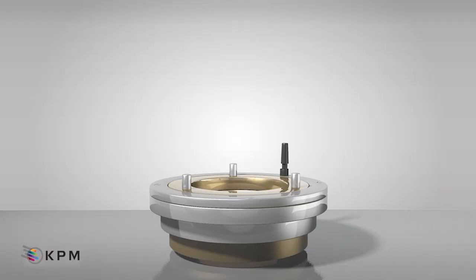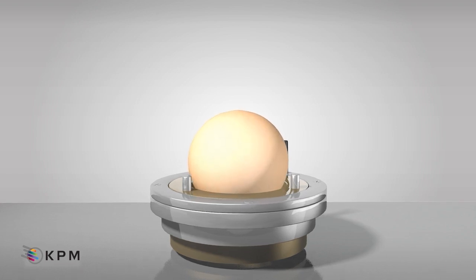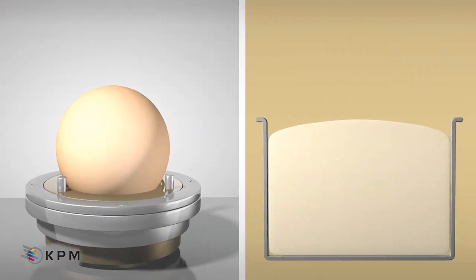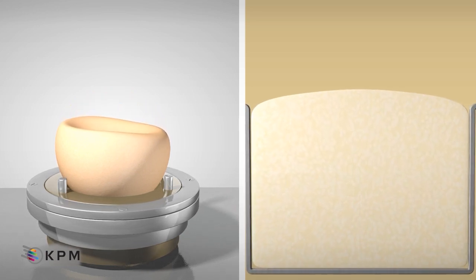An Alveograph test involves measuring the deformation of a dough bubble caused by a specific pressure generated using air. This dough extension simulates the deformation a dough undergoes during fermentation due to the pressure generated by carbon dioxide.